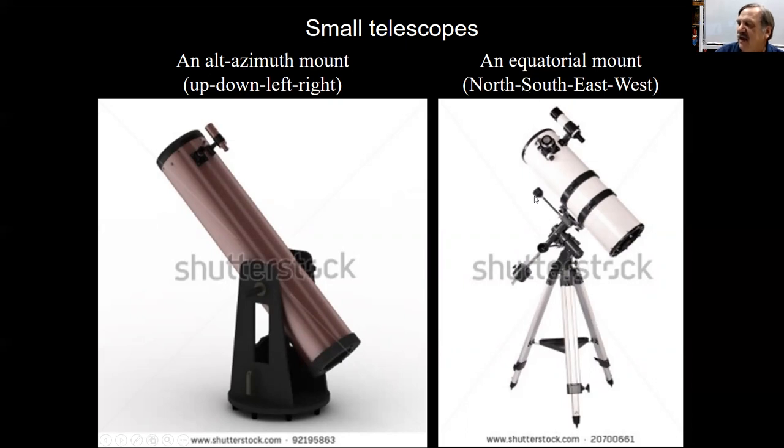The thing is an equatorial mount moves north and south, north and south in this direction, and east and west, east and west in this direction. So north and south around this axis and east and west around this axis. What this does is it can compensate for the motion of the Earth. And now when you point a telescope at your target, it stays at the target. After a couple minutes, the Earth has rotated enough that you're no longer on your target.